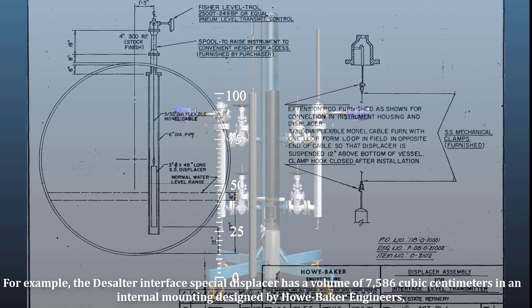For example, the desalter interface special displacer has a volume of 7,586 cubic centimeters in an internal mounting designed by Halbaker engineers.